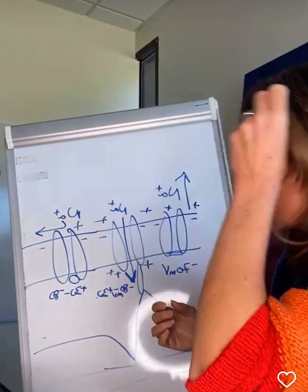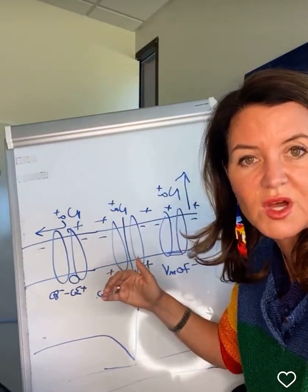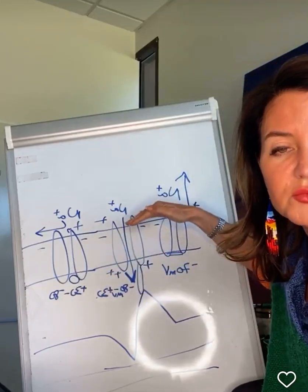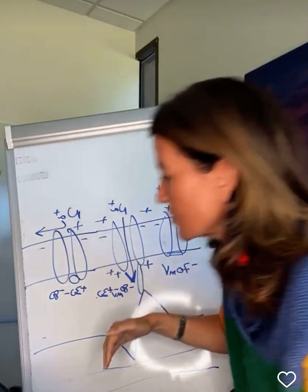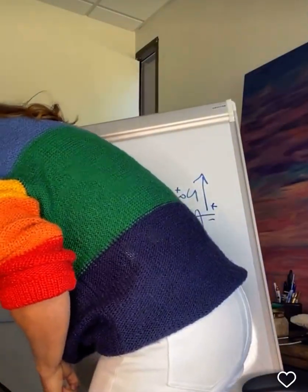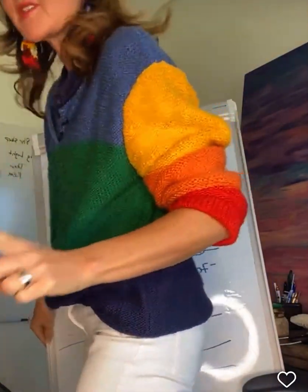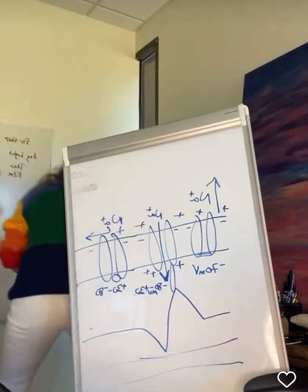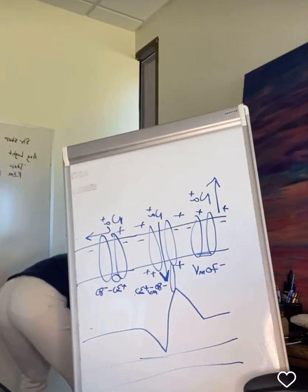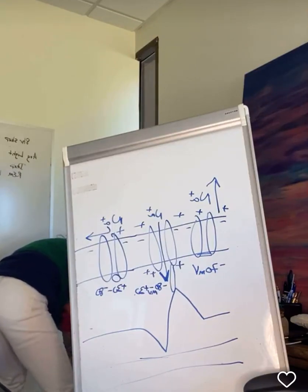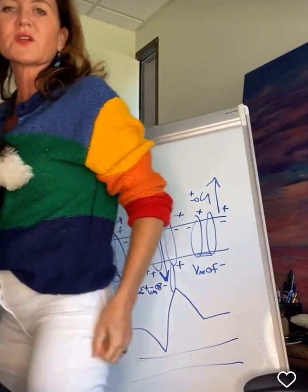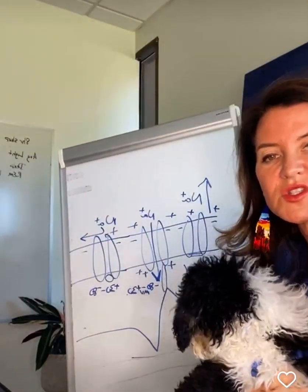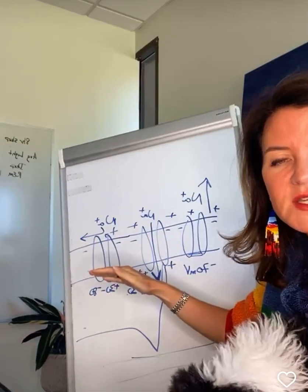So for example, if you take a calcium channel blocker, you're blocking calcium from being able to get in and do its job. You're blocking those ions from going across that membrane to be able to get in and do its job.